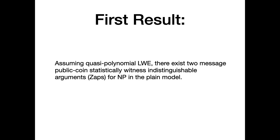Our first main result shows that the answer is yes. We show that there exist statistical zap arguments for all languages in NP in the plain model, assuming quasi-polynomial LWE. The actual assumption we use is a variant of LWE I'll call LWE star, which I'll explain at the very end. For the remainder of this talk, I'll give a high-level overview of how our construction of statistical zap arguments works.